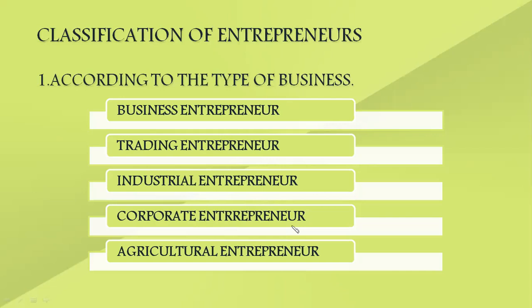According to the type of business, we have: business entrepreneur, trading entrepreneur, industrial entrepreneur, corporate entrepreneur, and agricultural entrepreneur. A business entrepreneur conceives a new idea and starts a business. A trading entrepreneur mainly deals with trading activities, not much involved in production or manufacturing. Industrial entrepreneurs are product-oriented people who start an industrial unit to make a new product.